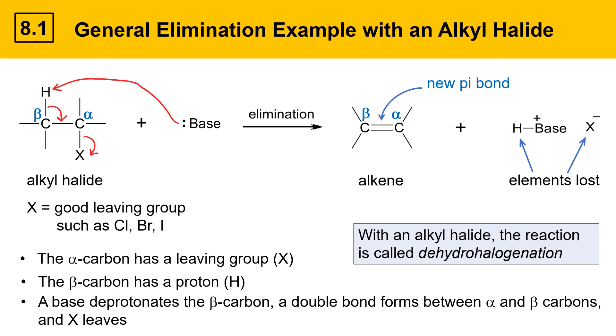That's why it's called an elimination reaction, because elements are lost. With an alkyl halide, the reaction is called a dehydrohalogenation, because a hydrogen and a halogen are both lost from the molecule.